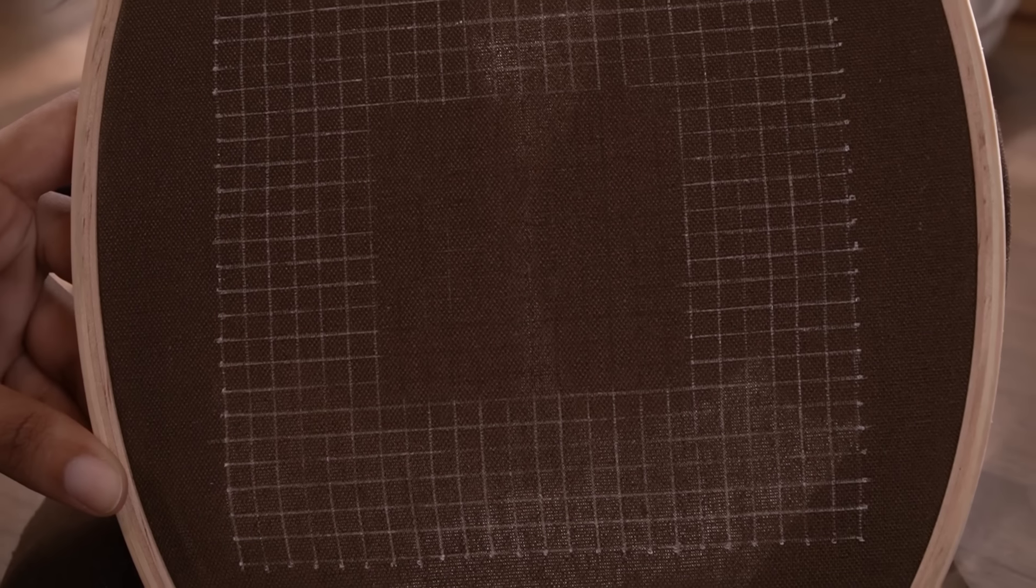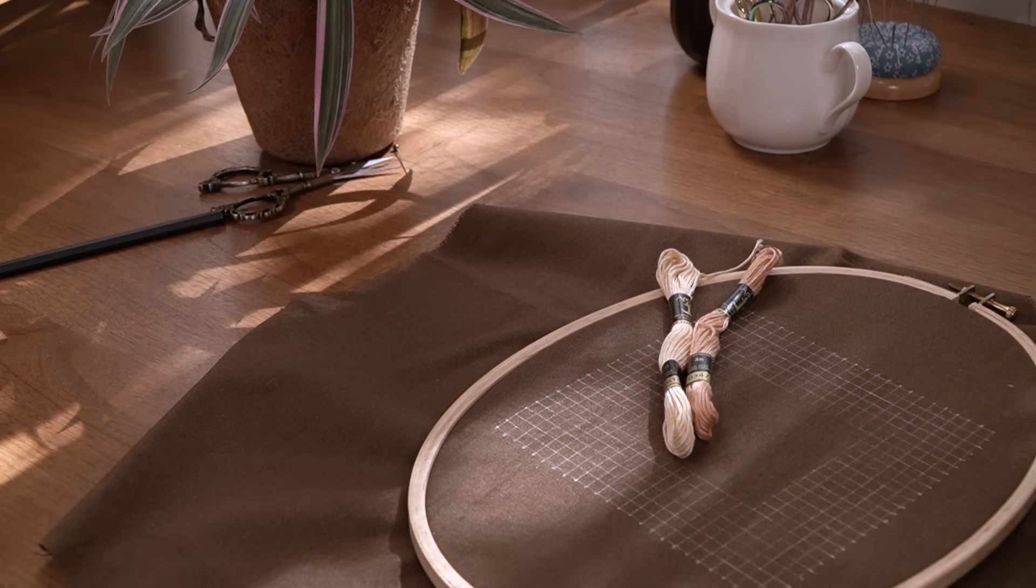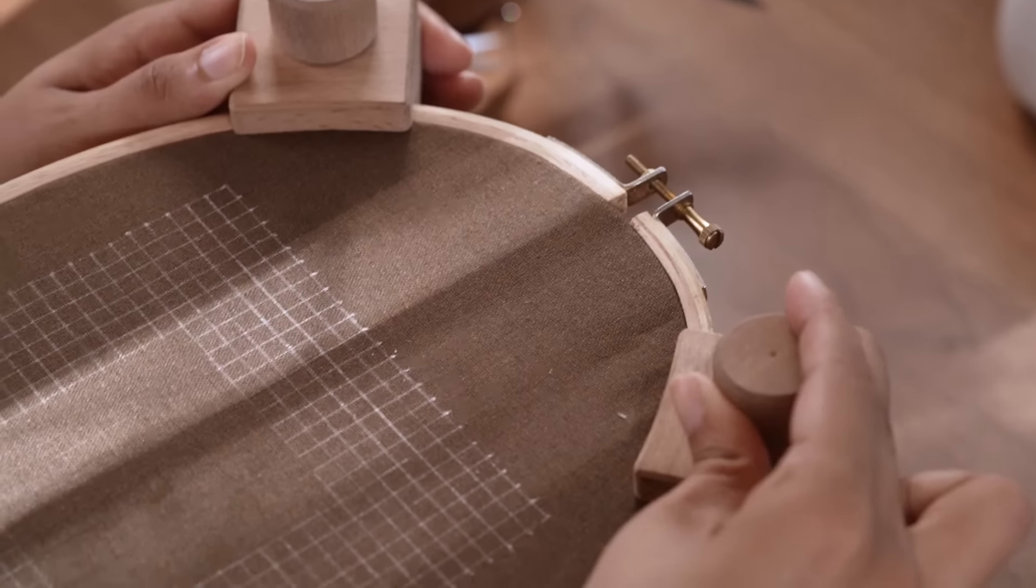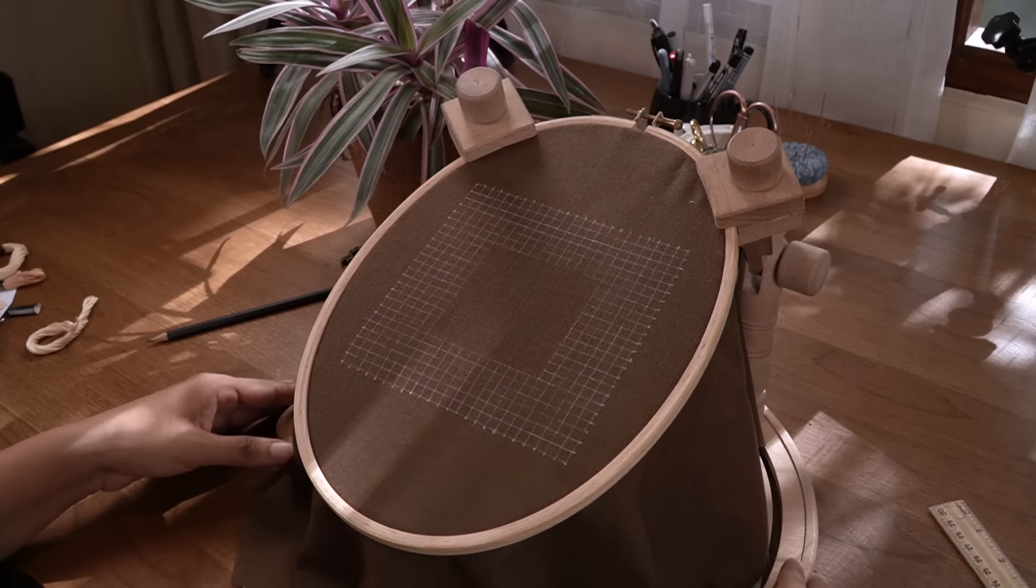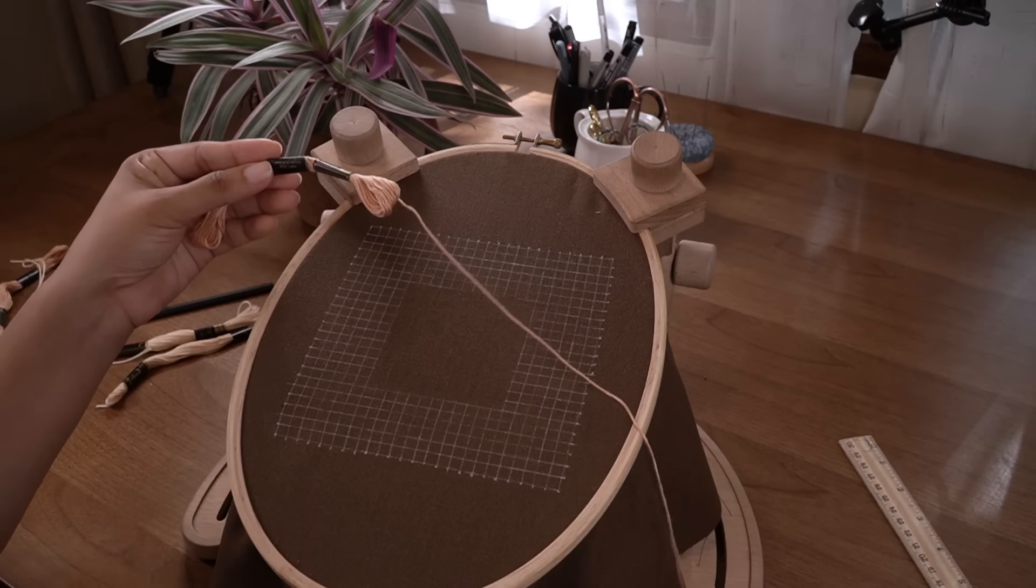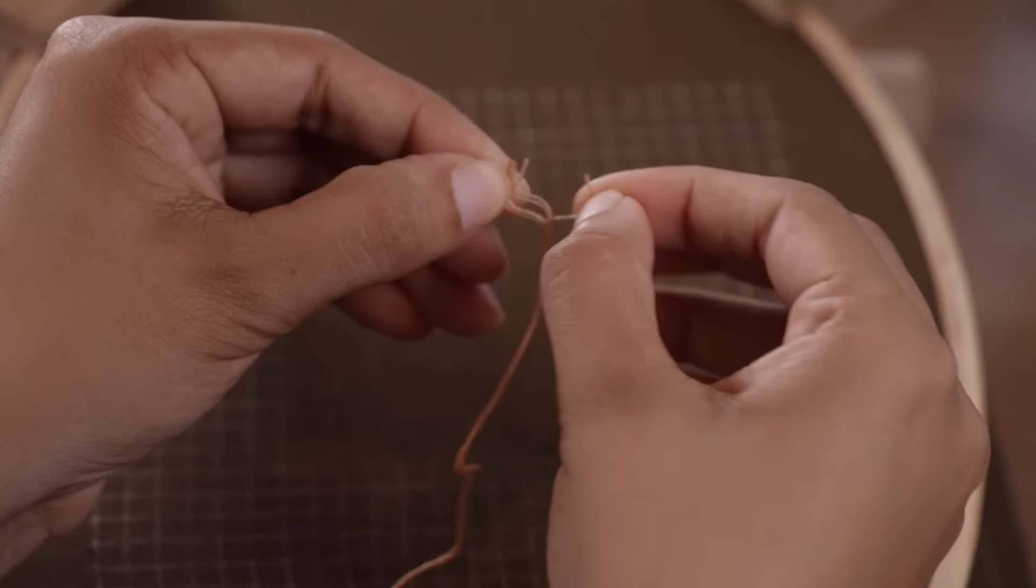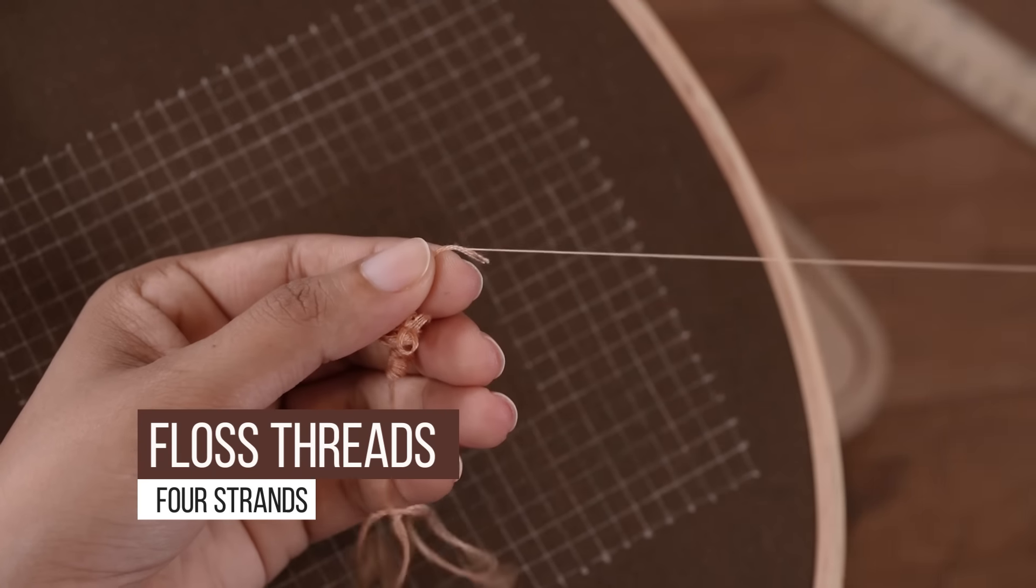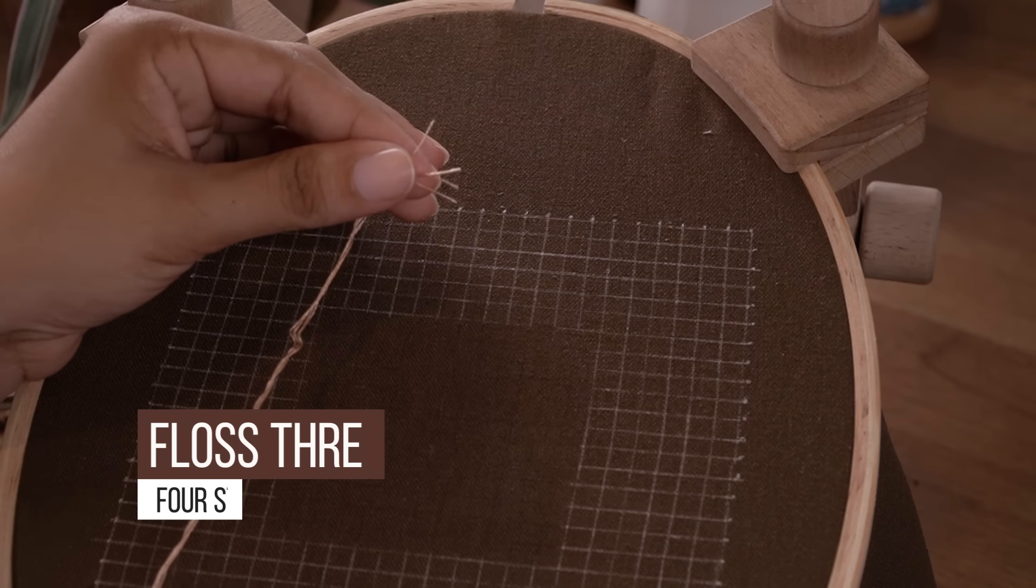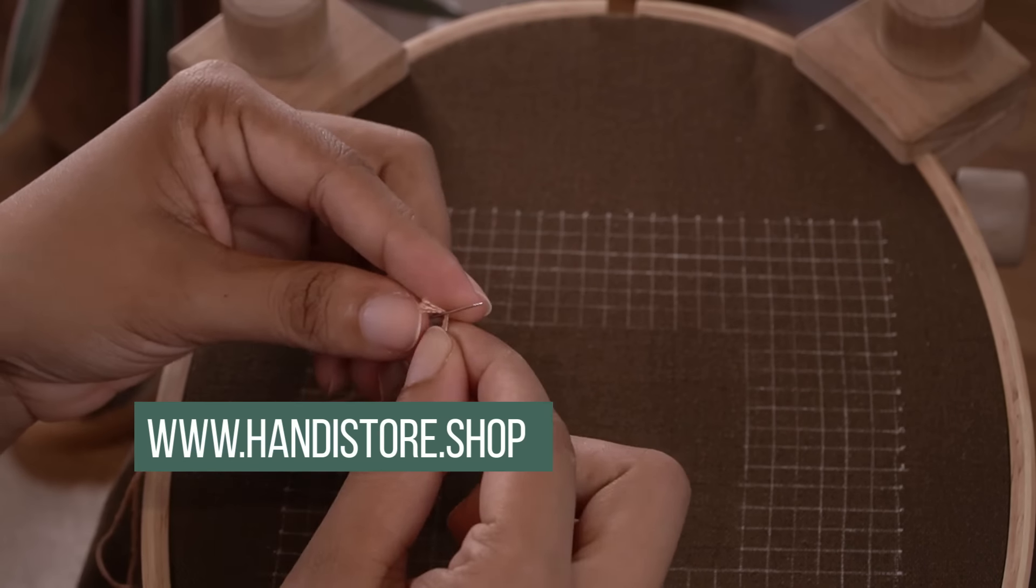I fix my hoop with an adjustable embroidery stand. This not only prevents shaking, but also provides a comfortable and convenient setup for the entire project. And remember, you have the flexibility to explore with or without an embroidery hoop. If you're interested in these embroidery essentials, you can find them on my HandyStore website at handystore.shop.